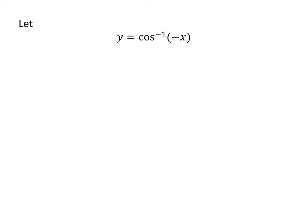To prove the identity, let us assume y equals arccos of minus x. As cosine is inverse of arccos, cosine of y equals minus x.